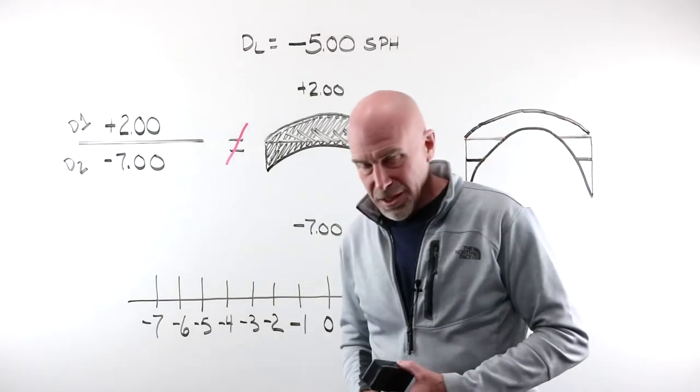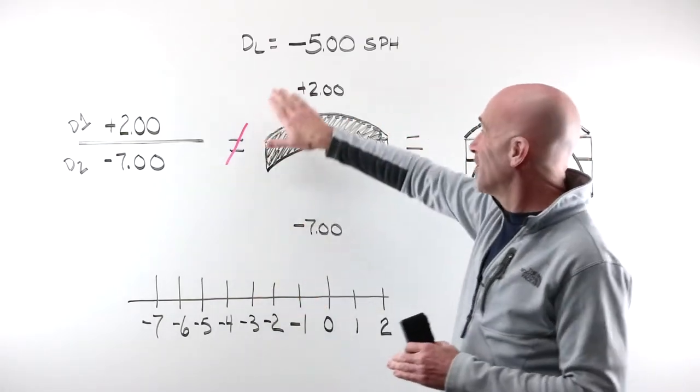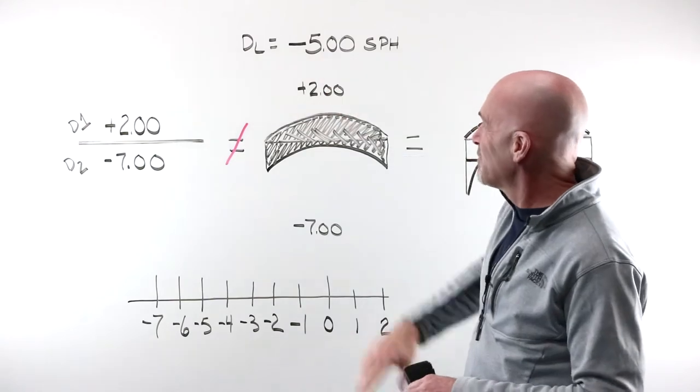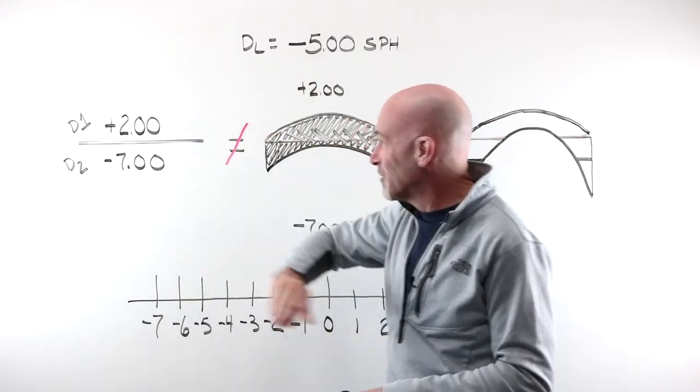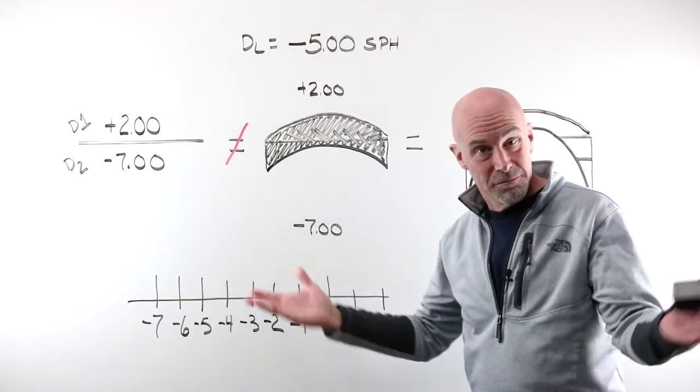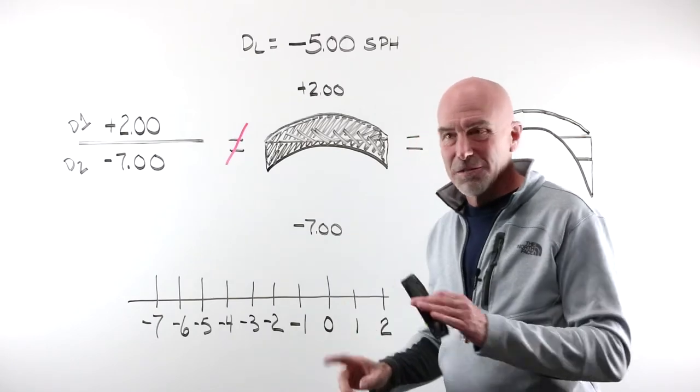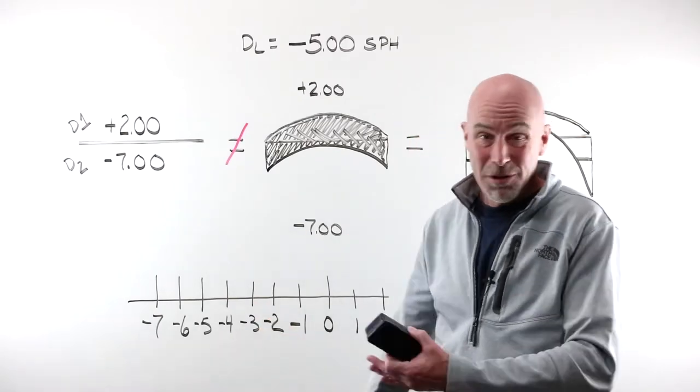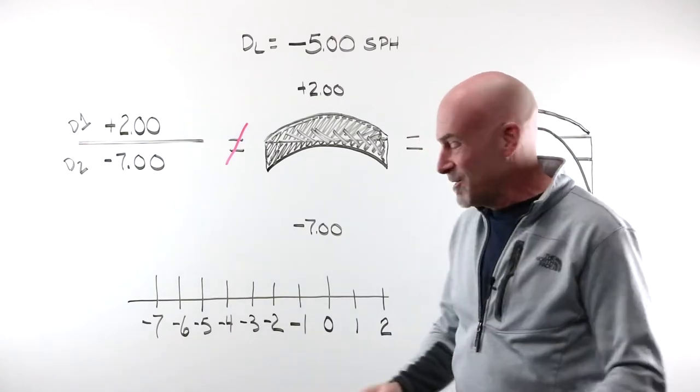Let me see if I can make this a little bit clearer. Nice theory, isn't it? If I need a minus five for total power, I put a plus two on the front, I grind a minus seven on the back, and I end up with a minus five. Great. Now here's the thing, and this is the aha moment I certainly had sometime during my time as a student. Hopefully you will see it yourself.